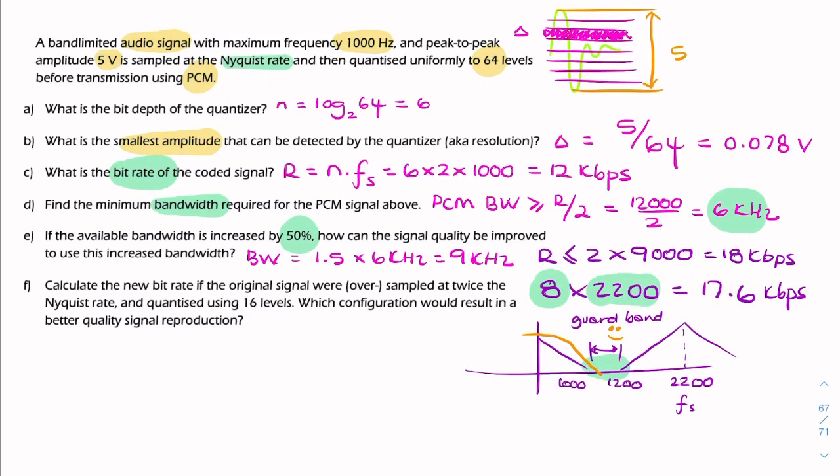By adding 2 bits, it means that my total number of levels won't be 2 to the power of 6, it'll be 2 to the power of 8. So we now have, instead of 64 levels, we have 256 levels.